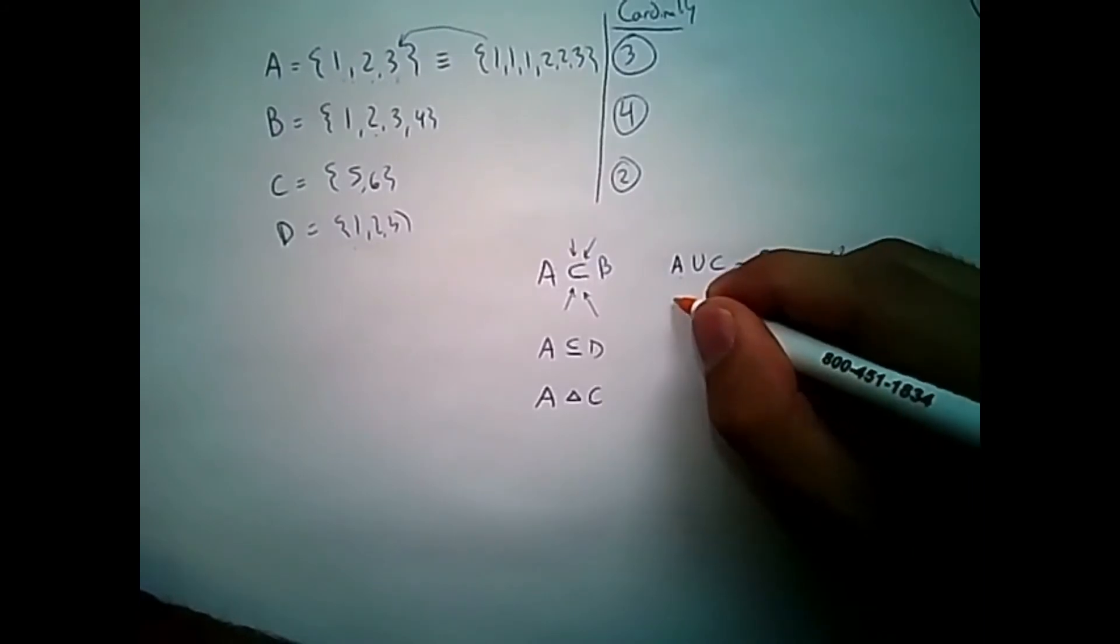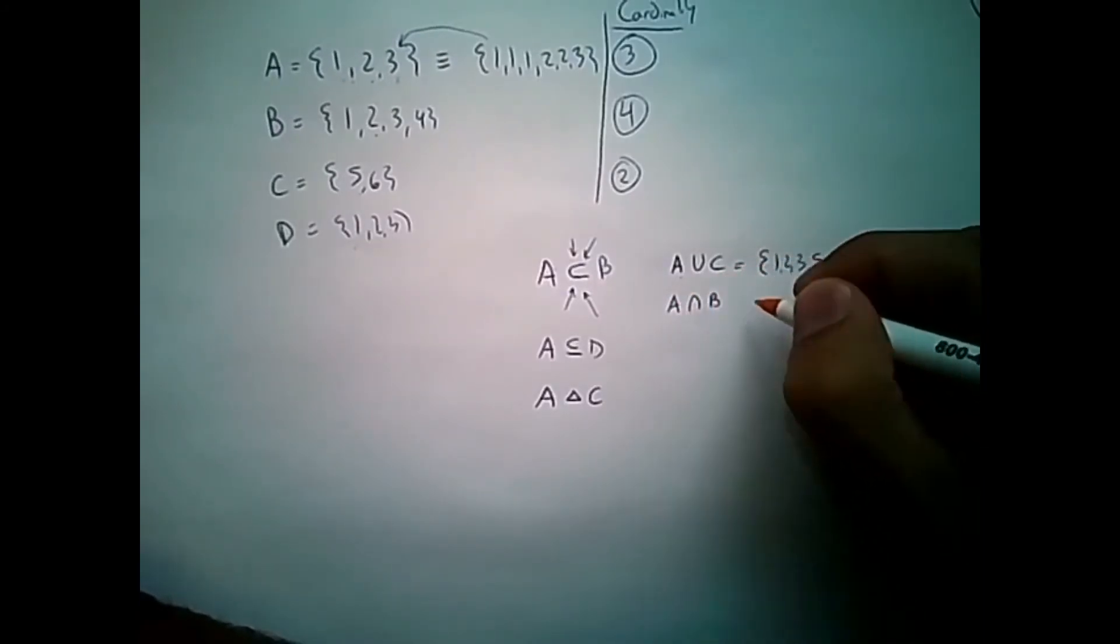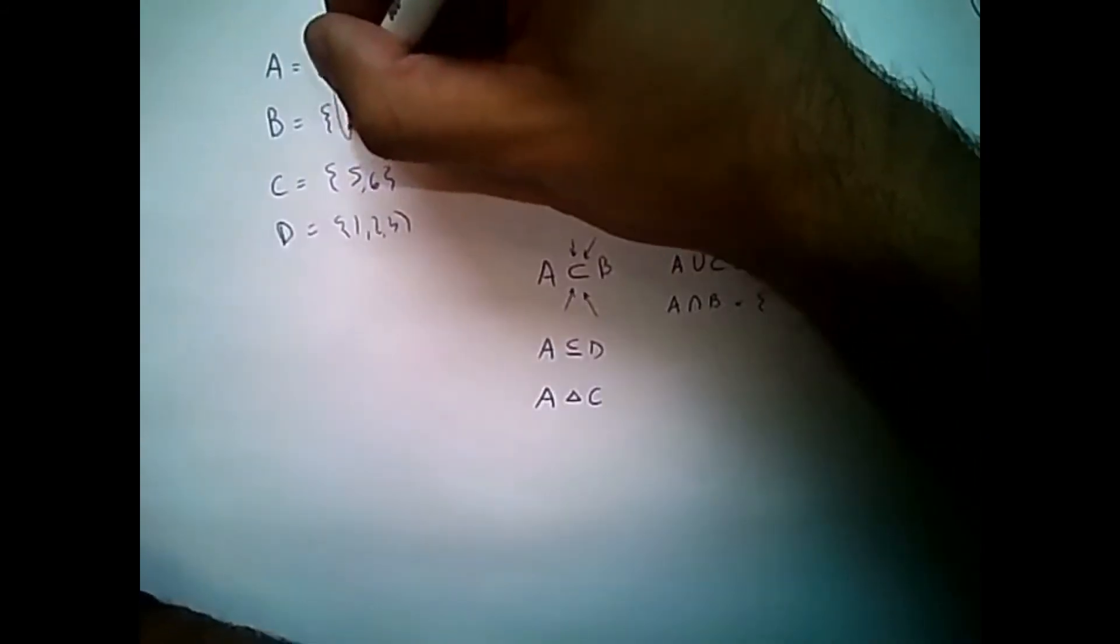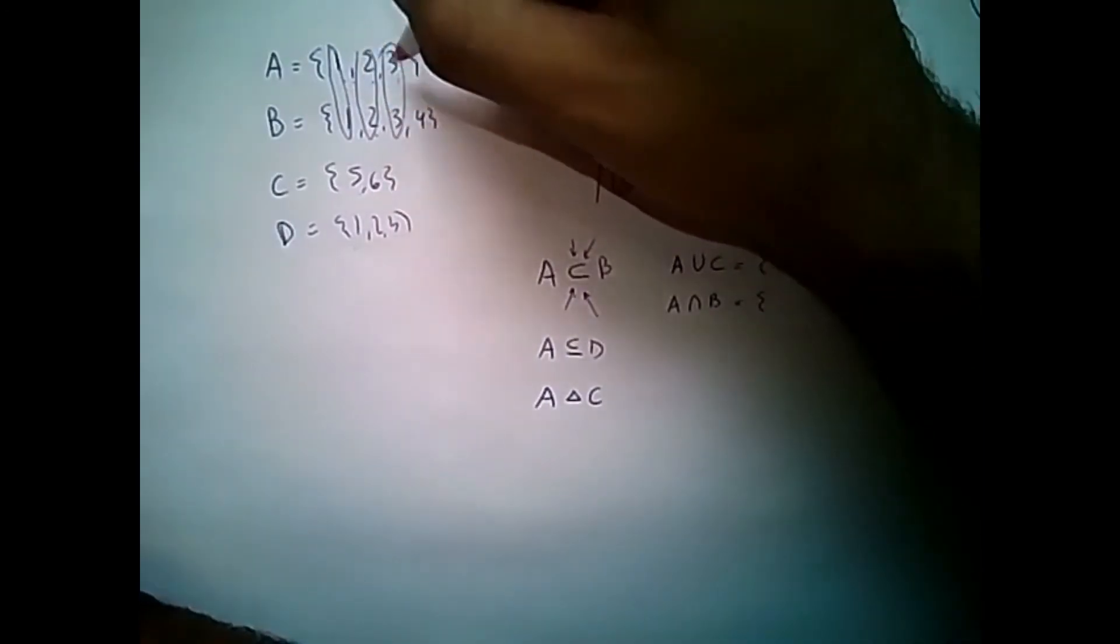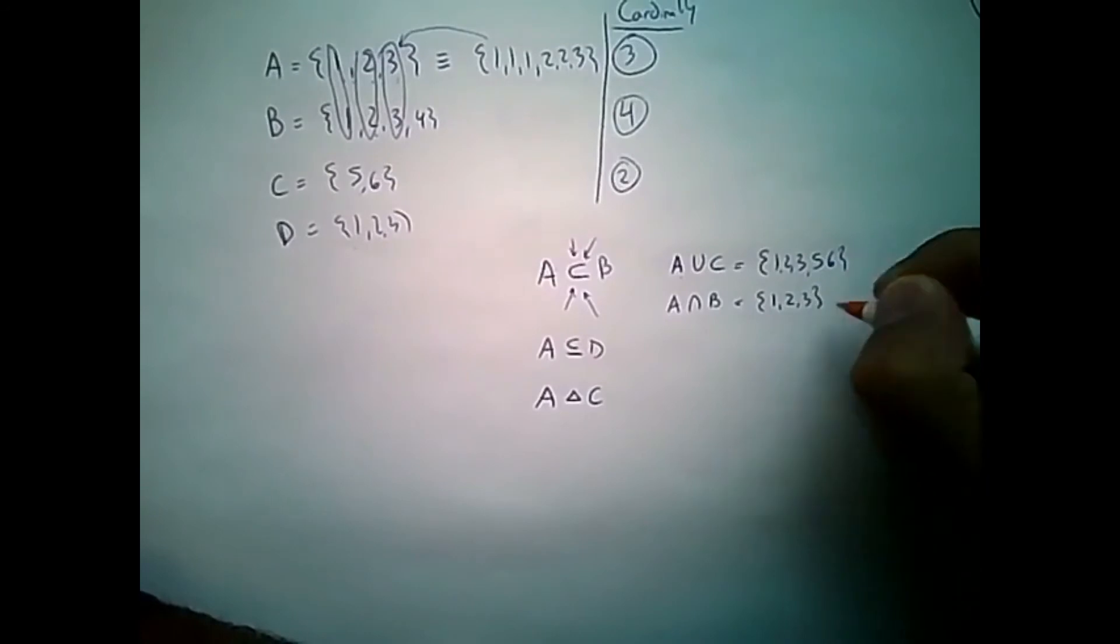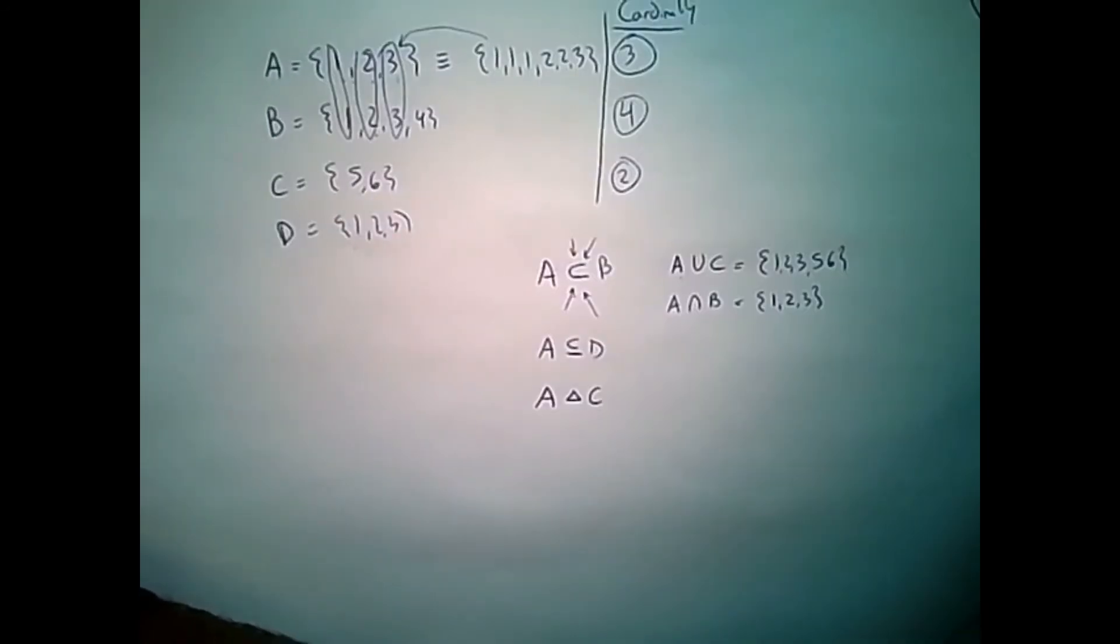If we wanted to say A intersected with B, that's all the items that are shared. So I see 1 in both sets, 2 in both sets, 3, but 4 is uncommon. So this is just 1, 2, and 3.